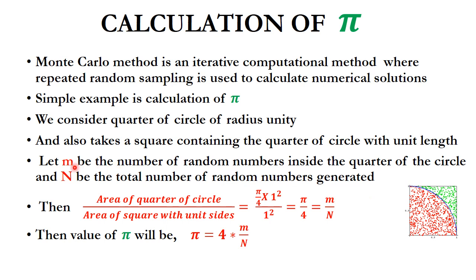Let small m be the number of random points inside the quarter of the circle — the red points — and capital N be the total number of random numbers generated, meaning the red points plus the green points.